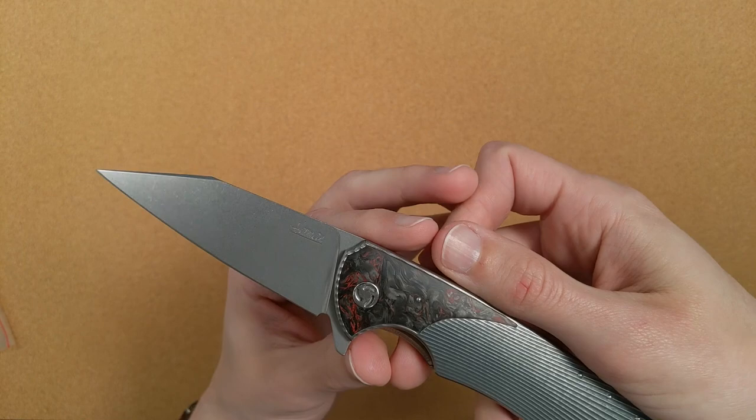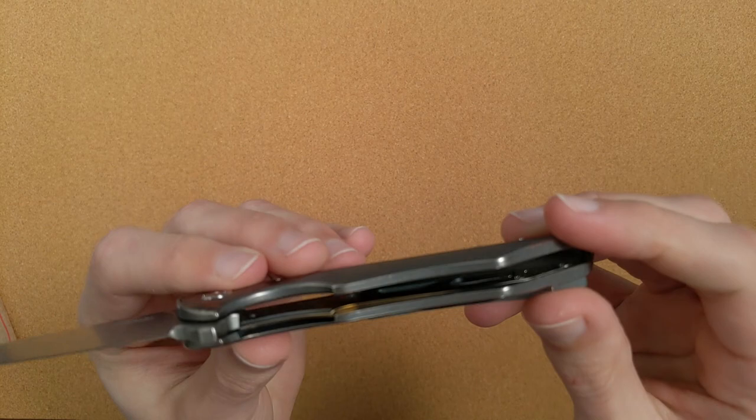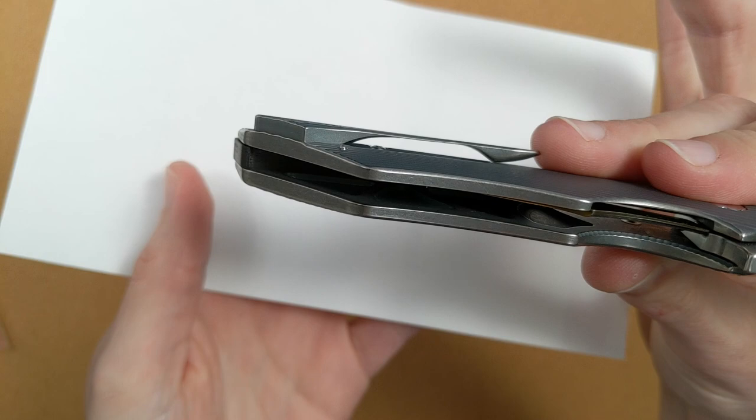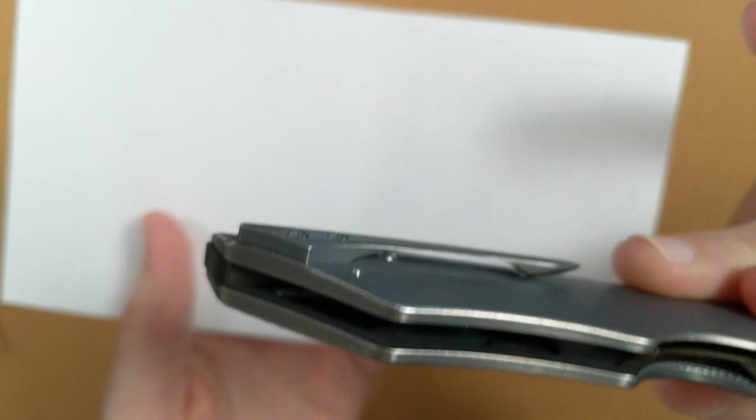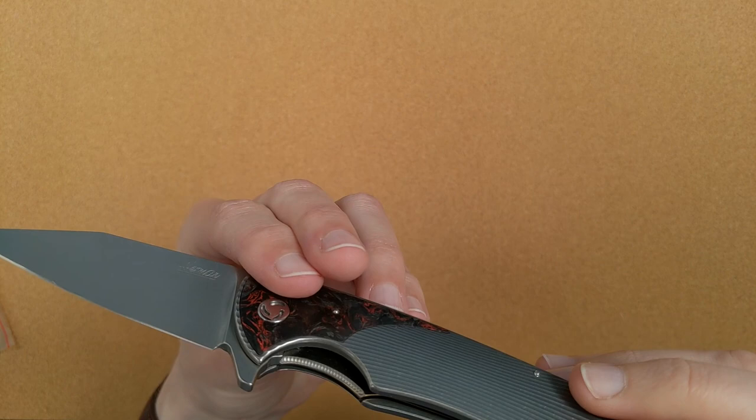There is a very heavy internal skeletonization here. Let's see if I can use this as a backdrop. Can you see? Maybe if I hold it this way. Anyway, this is very heavily skeletonized. And look at this pivot, this is so cool. This is the coolest way to do a captive pivot.